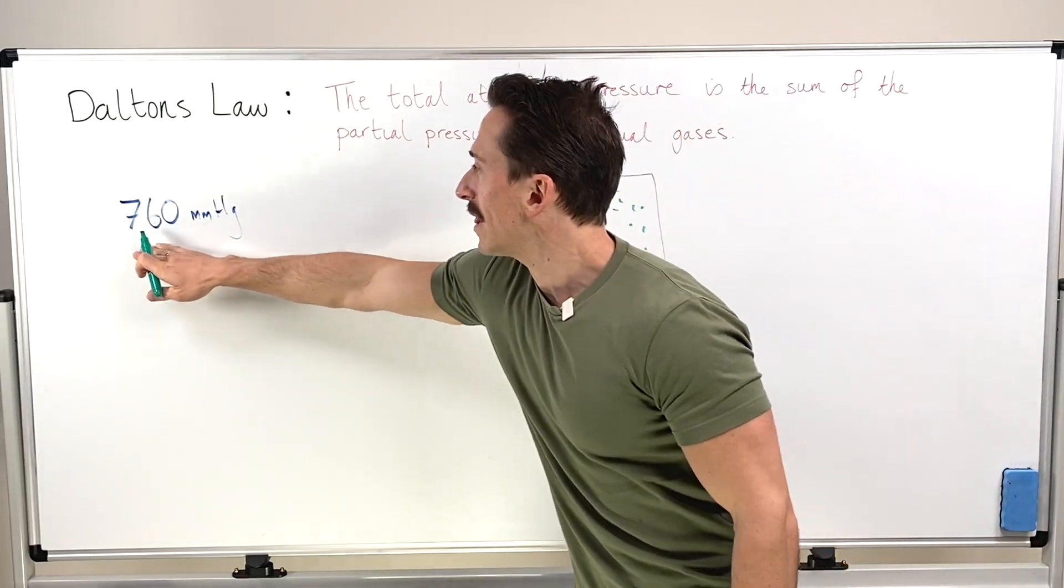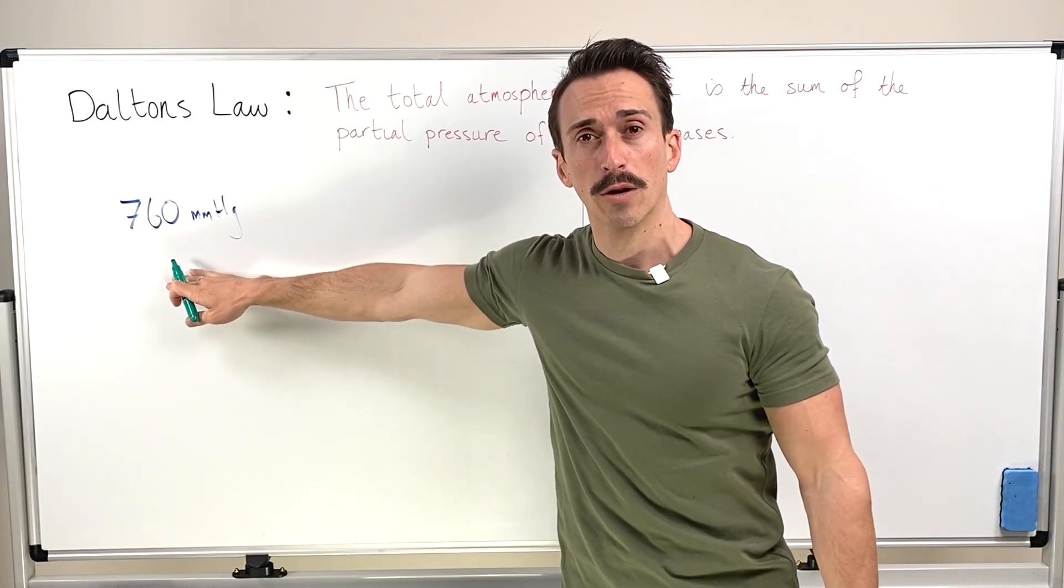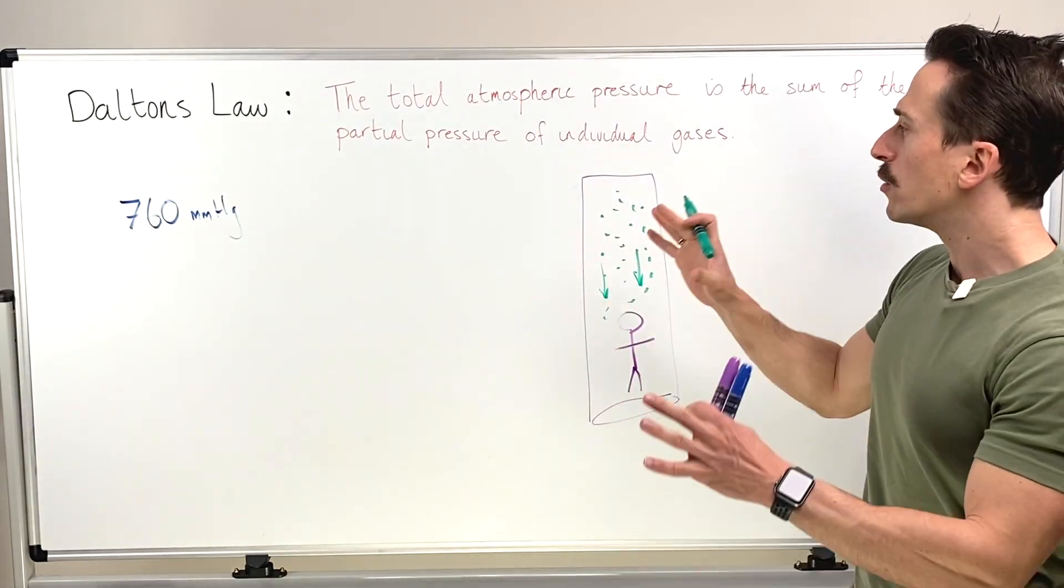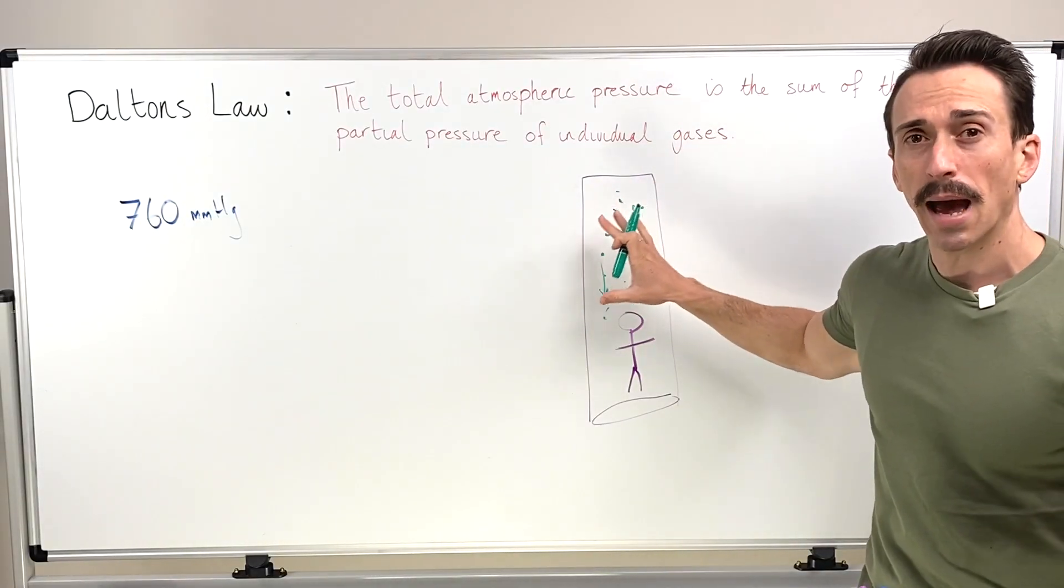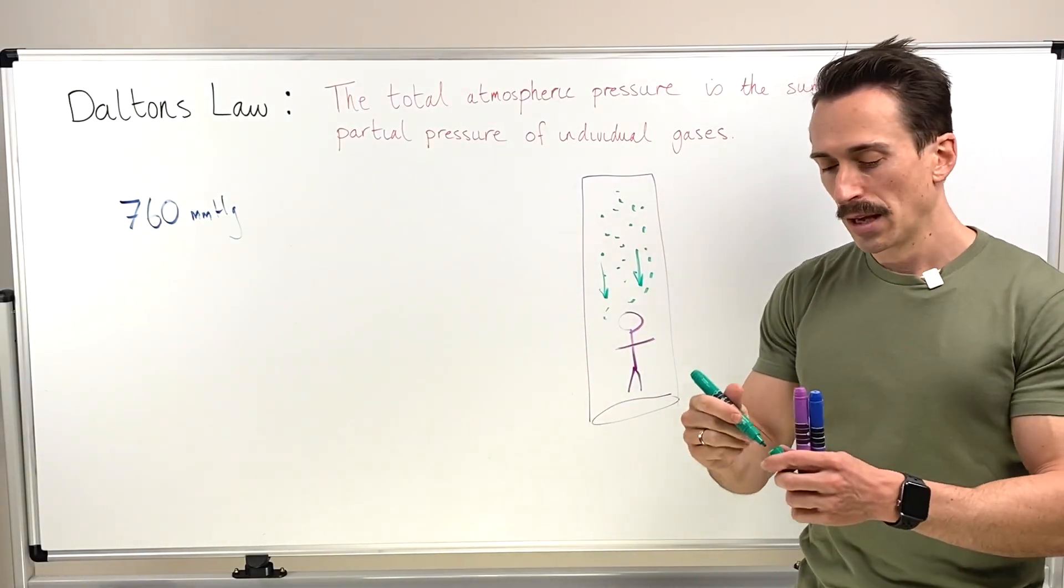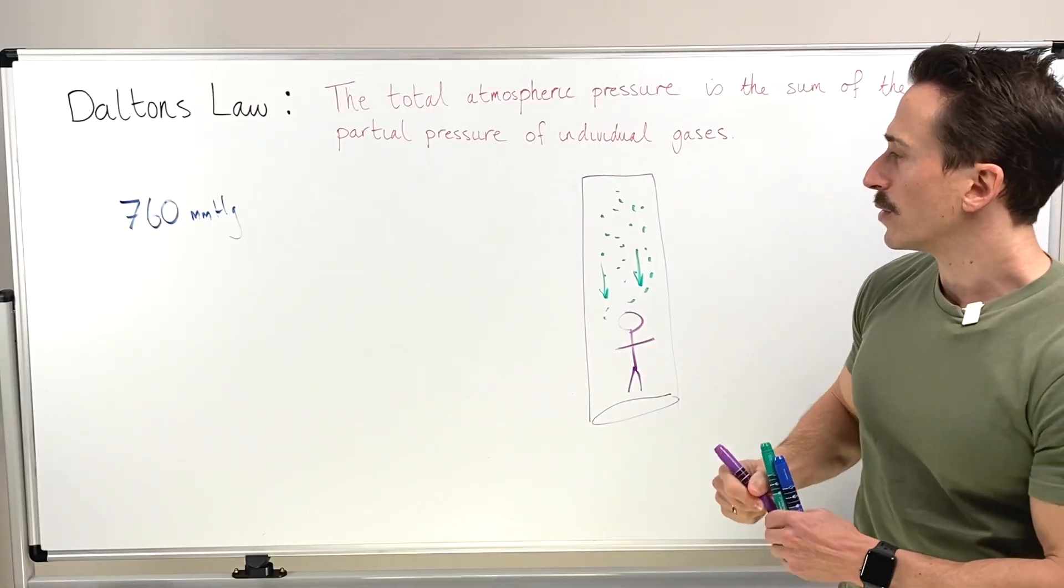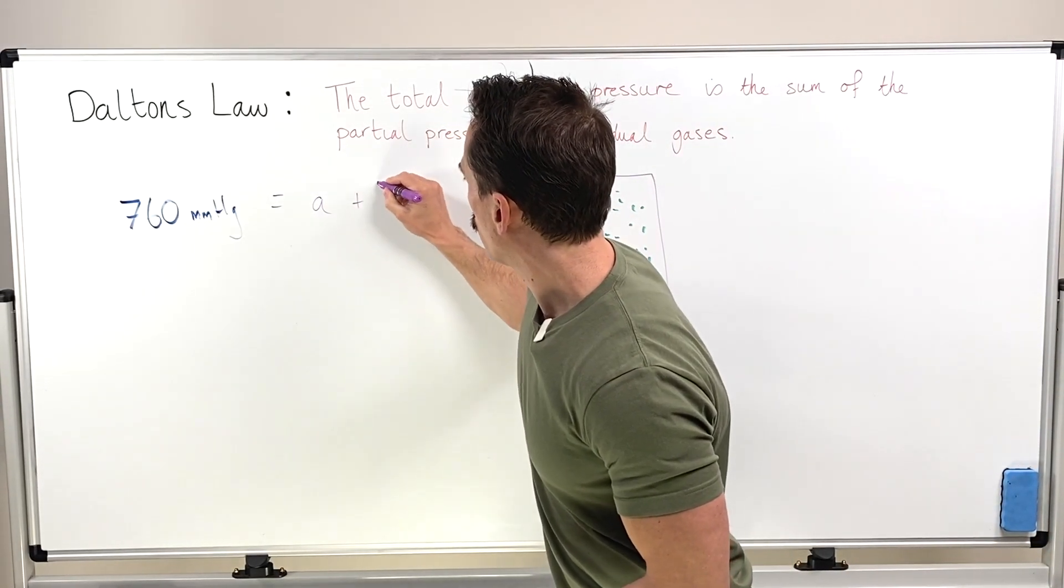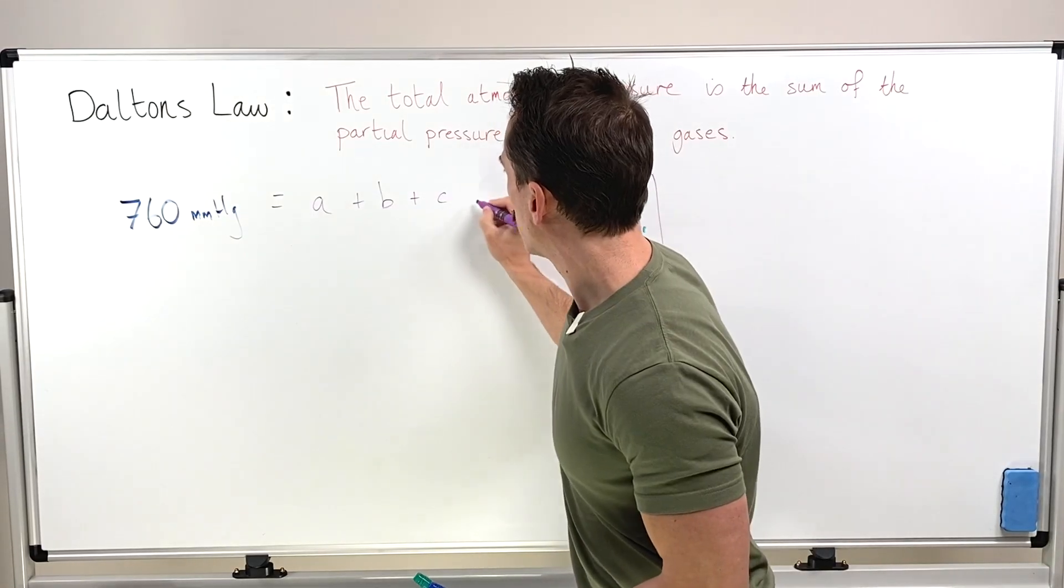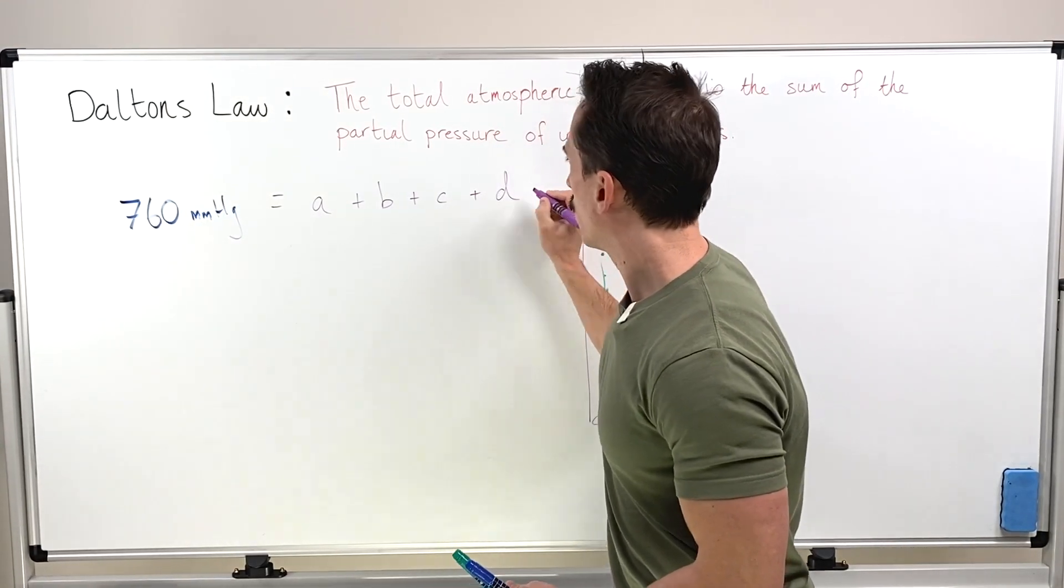Now, Dalton's Law states that in order to get this 760 millimeters of mercury worth of atmospheric pressure, you simply take all the individual gases that make up the atmosphere and add them together. So for example, 760 millimeters of mercury is equal to A plus B plus C plus D.